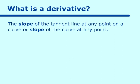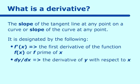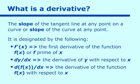What designation do we have? Derivatives can be designated by the following. The first one is f prime of x — we usually say the first derivative of the function with respect to x. Or we can say dy/dx, which means the derivative of y with respect to x. A third way is d of f(x) over dx, meaning the derivative of the function f(x) with respect to x.